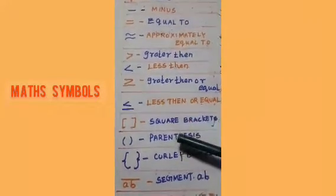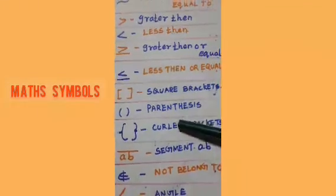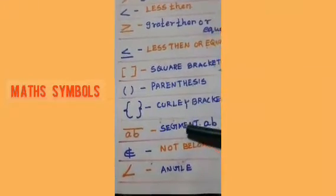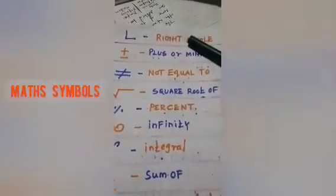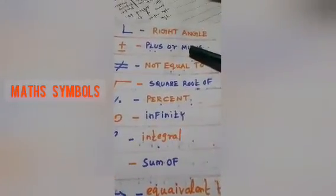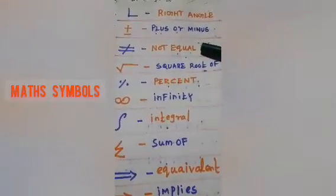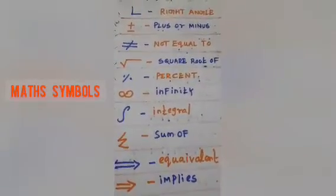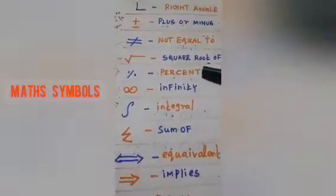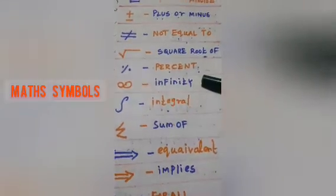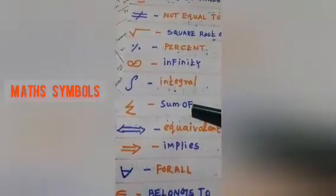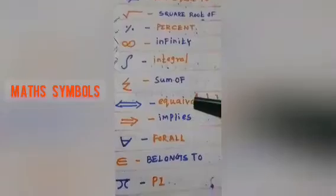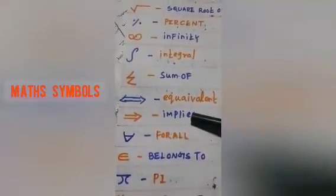Square bracket, parenthesis, curly bracket, segment AB, blanks to, angle, right angle, plus or minus, not equal to, square root of, percentage, infinity, integral, sum of, equivalent to, in place.